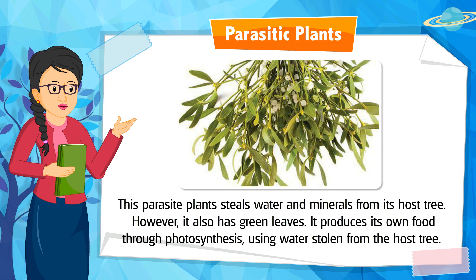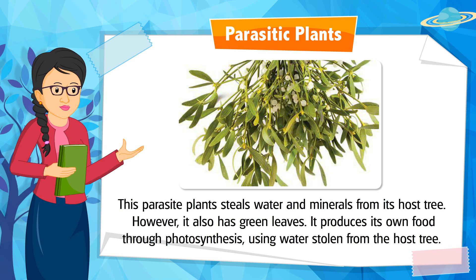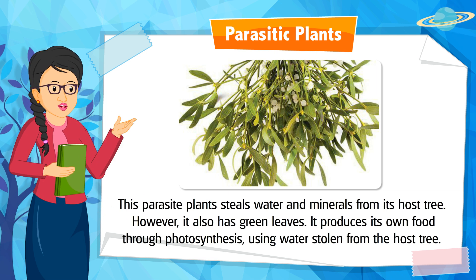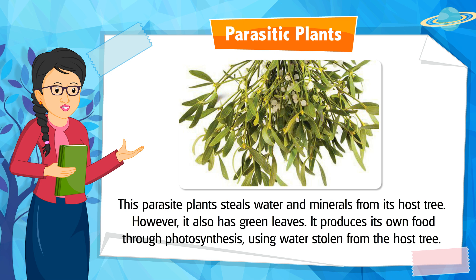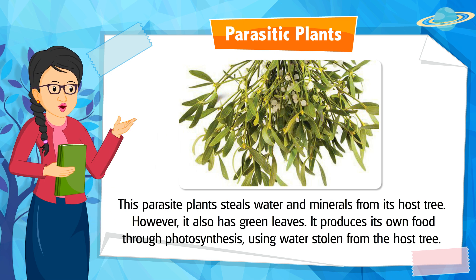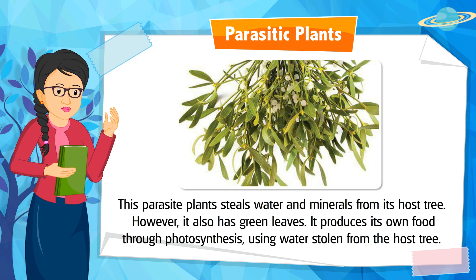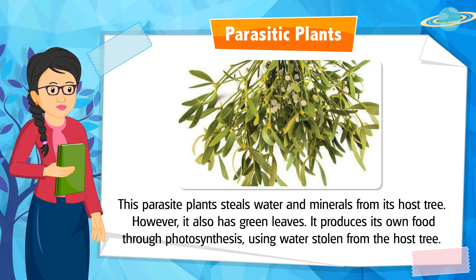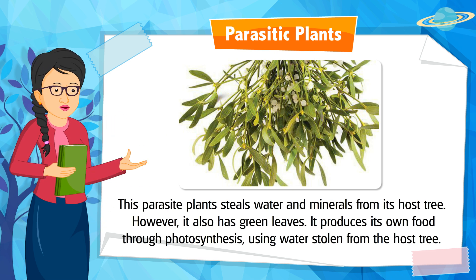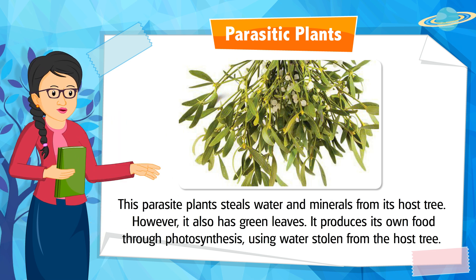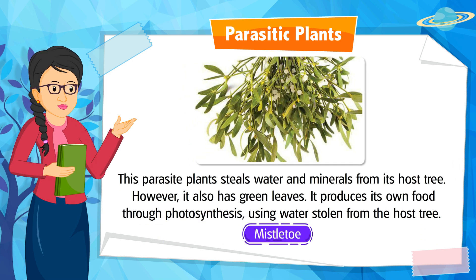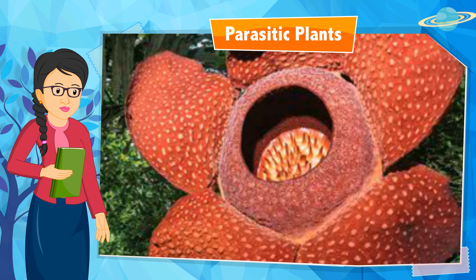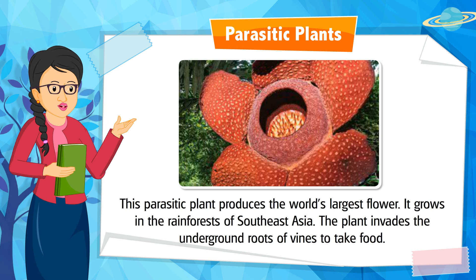This parasitic plant steals water and minerals from its host tree. However, it also has green leaves and produces its own food through photosynthesis, using water stolen from the host tree. It is mistletoe.